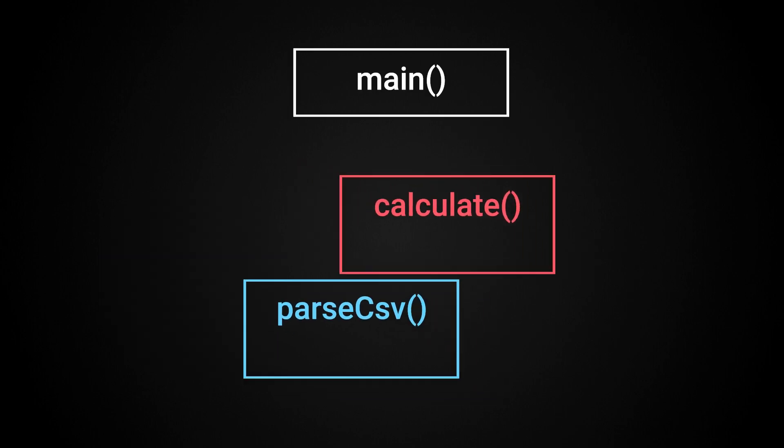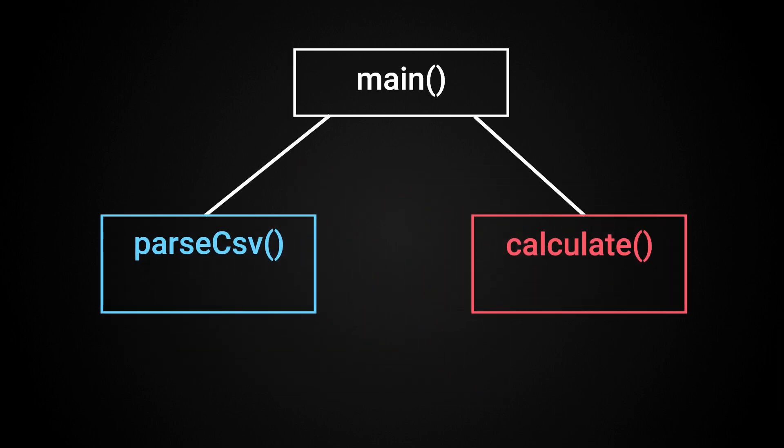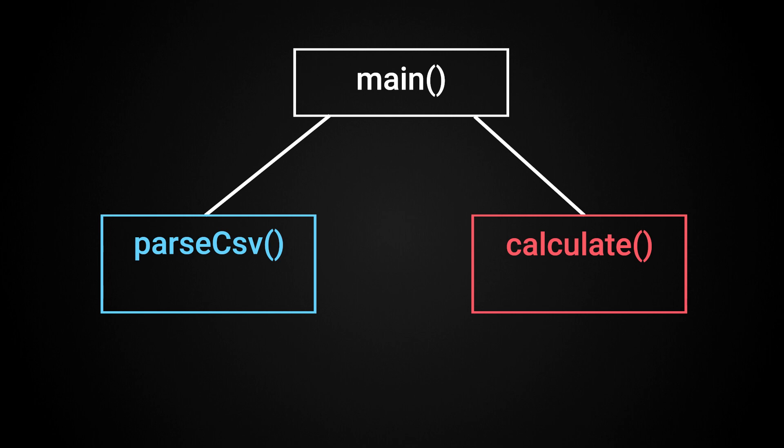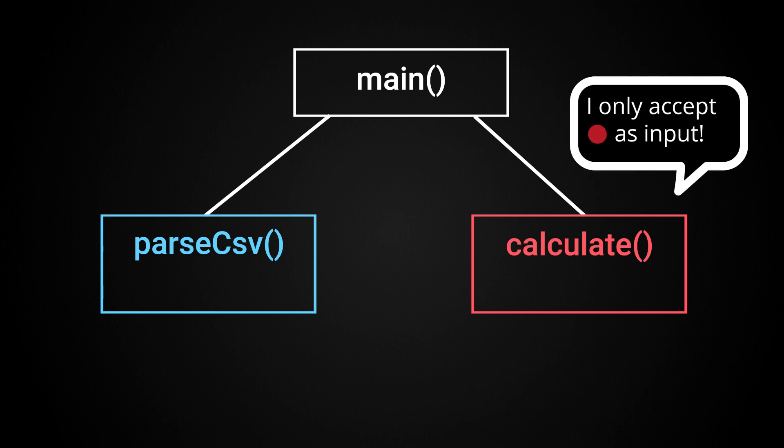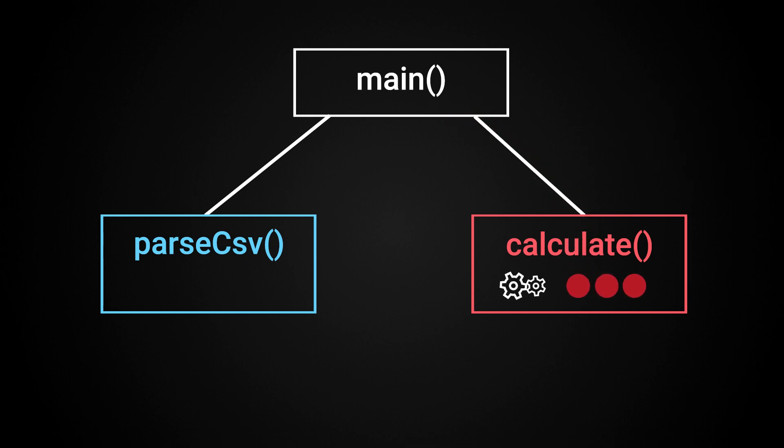One approach would be to have CSV parsing logic that sits isolated from calculation logic. The calculation logic could then define an interface for how it expects to be supplied data. A little bit of glue code could then use the CSV parsing logic, transform the data to the form expected by the report code, and then call the report code. At this point, because the parts are so isolated, we could freely change or swap out a new file parser or even report logic without impacting the other.